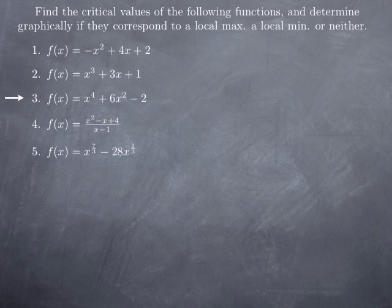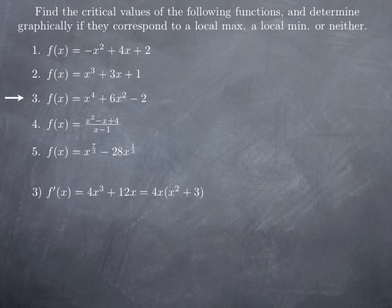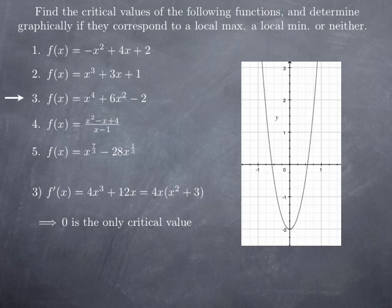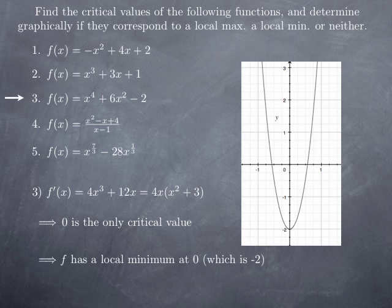For the function x⁴+6x²-2, it is again a polynomial, so we are looking for the zeros of the derivative. The derivative is 4x³+12x, which factors as 4x(x²+3). The factor x²+3 is at least 3 and therefore never 0. So f'(x) = 0 only at x = 0, which is the only critical value. If we sketch the graph, we see that at 0 there is a local minimum, which in this case is -2.